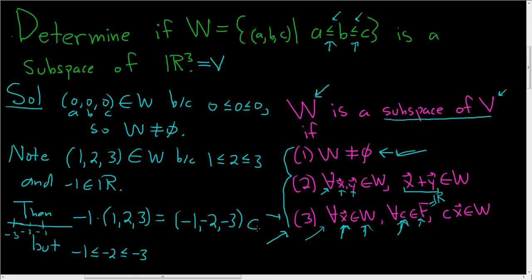This is false. So if this was true, then it would be in W. It's not true. So this vector is not in W. So this is not closed under scalar multiplication.